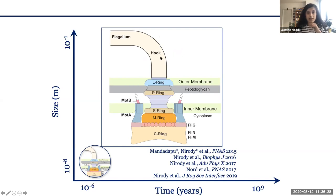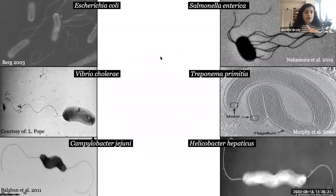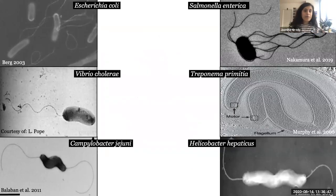The motor connects to the flagellar filament via a flexible protein hook. The reason that I originally got interested in flagellar locomotion is further down the timescale axis. I mentioned already that over 80 percent of bacterial species use flagella, so unsurprisingly flagellar number and arrangement across bacteria can be really diverse.